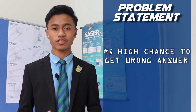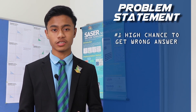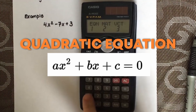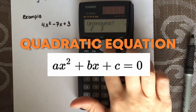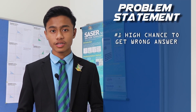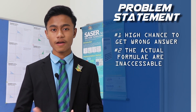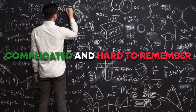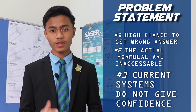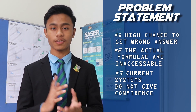So, what are the problems that we students encounter after using this traditional method? Firstly, there is a high chance of getting the wrong answer because students cannot check back their answer in transformation, unlike a quadratic equation for example, where you can check back your answer using the specific mode in the calculator. Next, the actual transformation formula is inaccessible to students because it is very complicated and also hard to remember. And lastly, the current system doesn't give confidence to students to answer transformation in examinations.